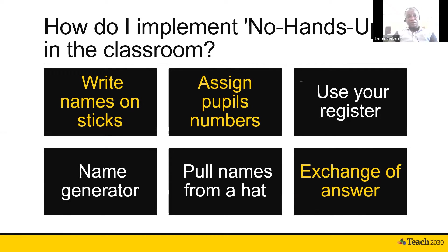We're just going to talk a little bit about how you implement No Hands Up in your classroom. One approach is to write names on sticks — you have a stick and you write the names of your students on it. Each time you pick it up, you look at it and call the name that appears before you. If it is John, you say, 'John, please answer the question.' Then you look at the next name that will follow.